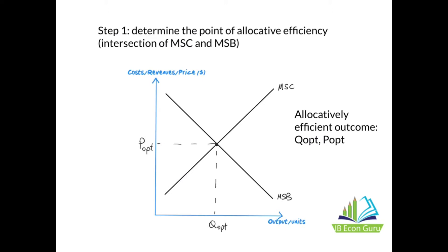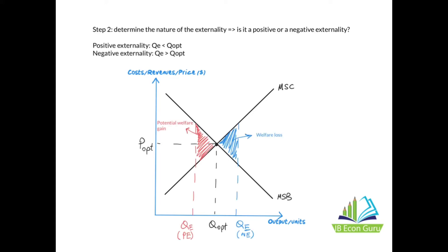Step one: always determine the point of allocative efficiency. Draw the point of allocative efficiency — this is the intersection of the marginal social cost (MSC) and marginal social benefit (MSB). The MSC is the optimal supply and MSB is the optimal demand from society's point of view. This gives us the allocatively efficient outcome: Q opt is the allocatively efficient quantity and P opt is the allocatively efficient price.